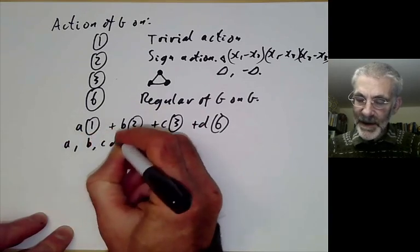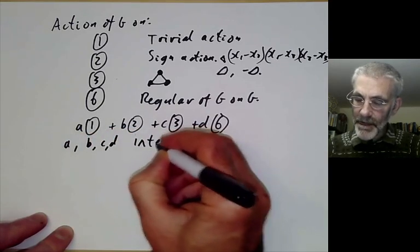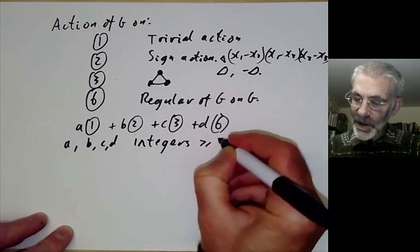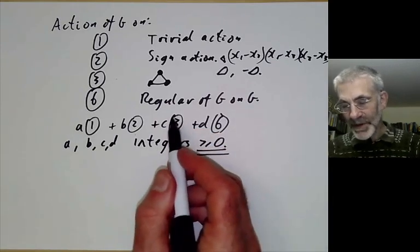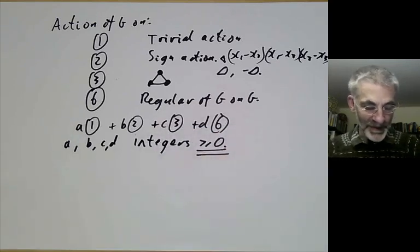A, B, C, and D are integers greater than or equal to zero because you can't have minus one times a set with three elements - that's not a set.